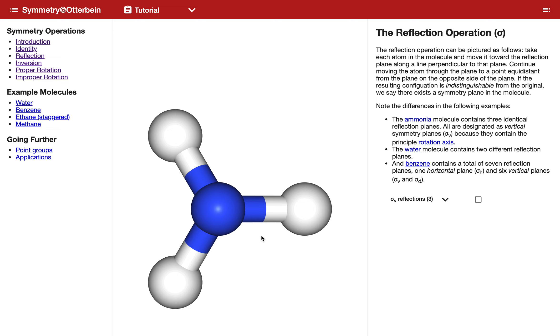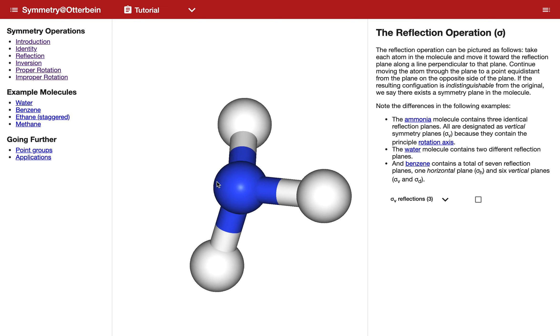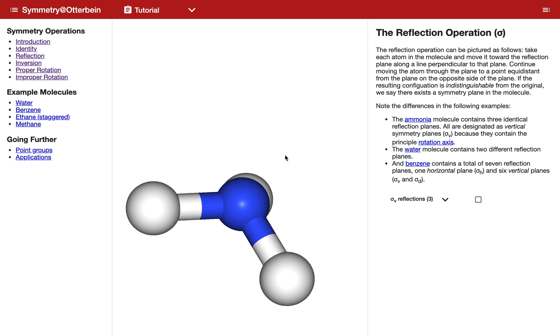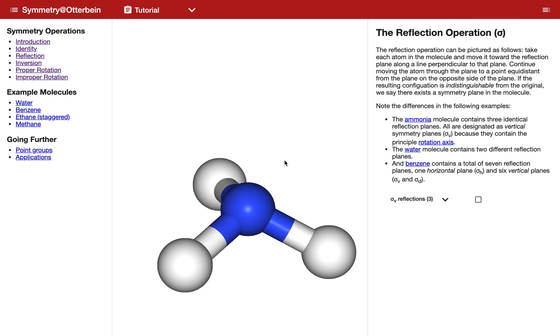We can use this to look at these different symmetry elements. Notice that this is an active page. You can rotate this thing around and look at it from different directions, which is very helpful when you're trying to visualize these symmetry elements. You can also resize this a little bit by scrolling your mouse and so forth.